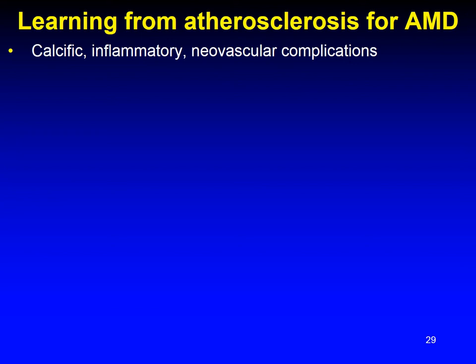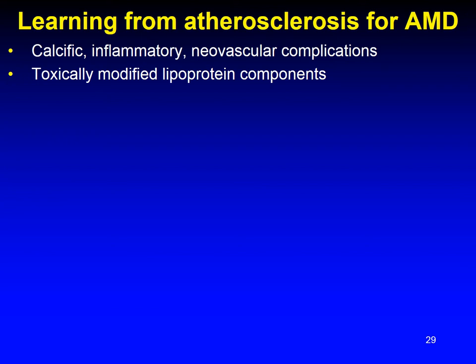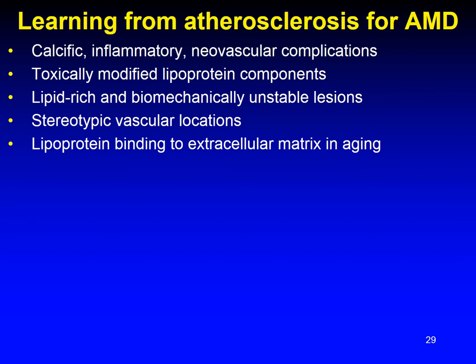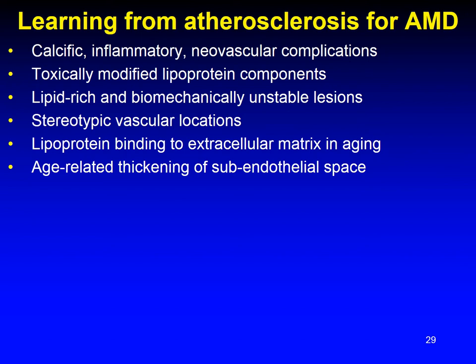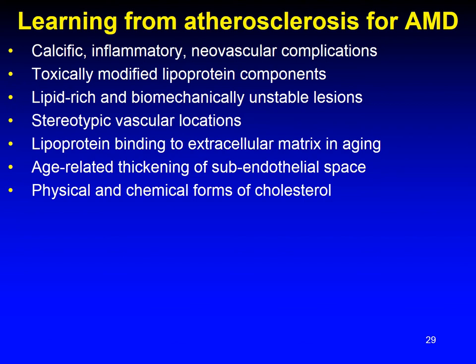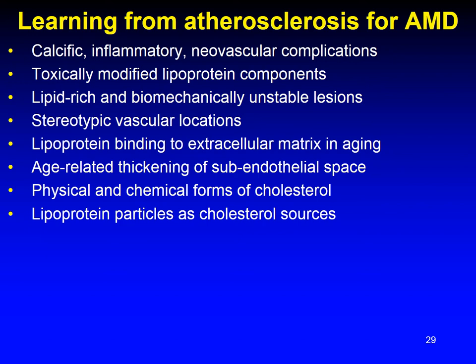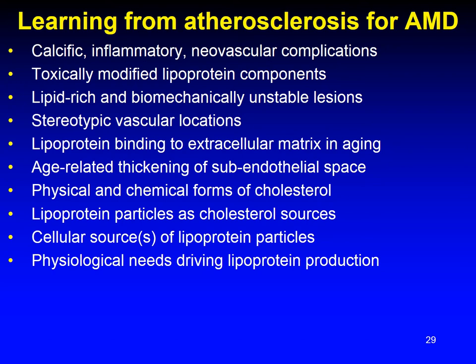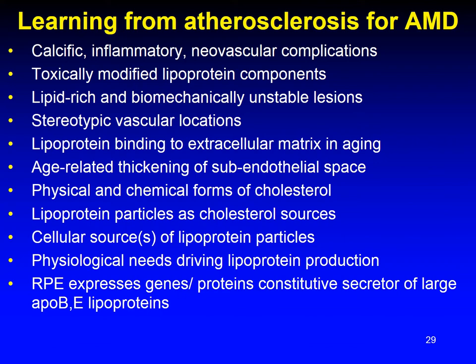Using the lipids in Bruch's membrane as a springboard, we learned a lot about AMD from the study of atherosclerosis. The two diseases — chronic diseases of aging — feature calcific, inflammatory, and neovascular complications, toxically modified lipoprotein components in vessel walls, and lipid-rich, biomechanically unstable extracellular lesions that occur in stereotypic vascular locations. These start by lipoprotein binding to extracellular matrix in aging, and they involve the age-related thickening of the subendothelial space, which here is Bruch's membrane.